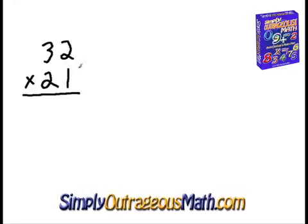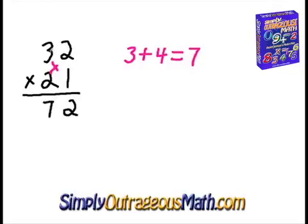We're going to first multiply 2 times 1, that is 2. And then we're going to cross. 3 times 1 is 3, and 2 times 2 is 4, so we'll add those together and that equals 7. So that would be our middle answer. And then we simply multiply the first numbers, which is 3 times 2 is 6. 672.